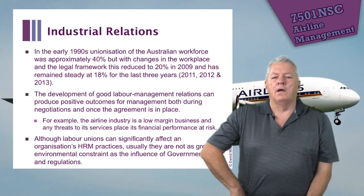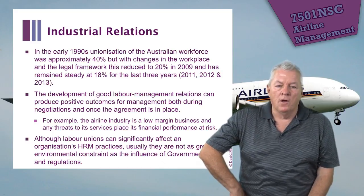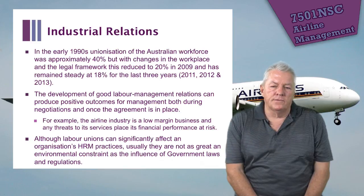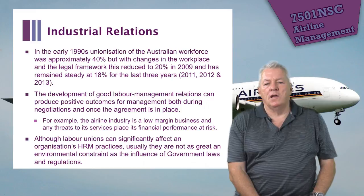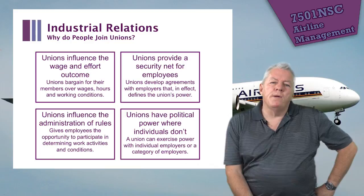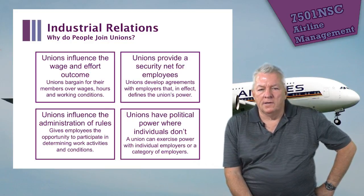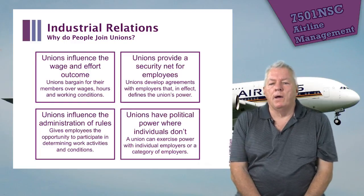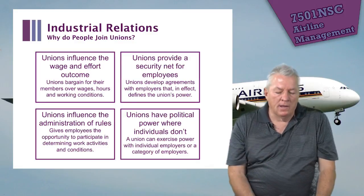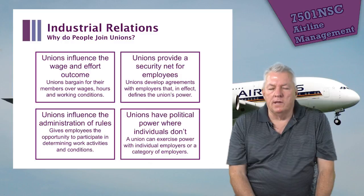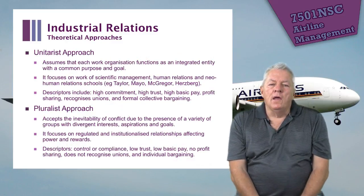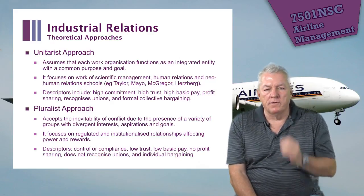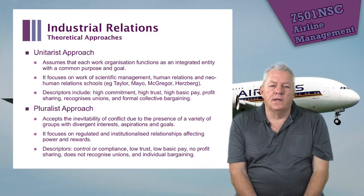Some of you who are Australian may remember the Qantas problems of two years ago. Although labour unions can significantly affect an organisation's HRM practices, usually they're not as great as the influence of government laws and regulations — often the government can make quite sweeping changes with far greater effects than relationships with unions. Why do people join unions? Unions influence the work and effort outcome, provide a security net for employees, influence the administration of rules, and have political power where individuals don't — that collective basis of representing workers rather than them dealing individually with employers. Academics describe two theoretical approaches to how organisations deal with staff from an industrial relations perspective: the unitarist approach and the pluralist approach.